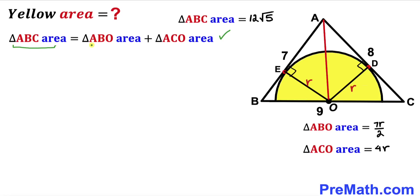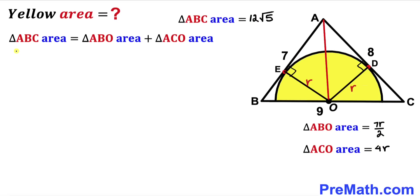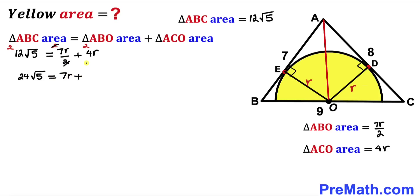Recalling that the area of triangle ABC equals the sum of the two sub-triangle areas, we substitute: 12√5 = 7r/2 + 4r. Multiplying both sides by 2 to clear the fraction gives 24√5 = 7r + 8r = 15r.